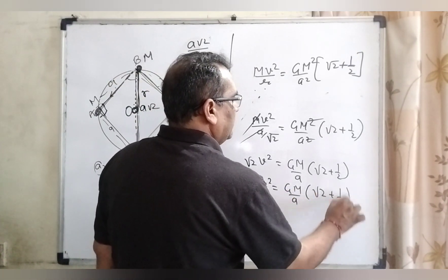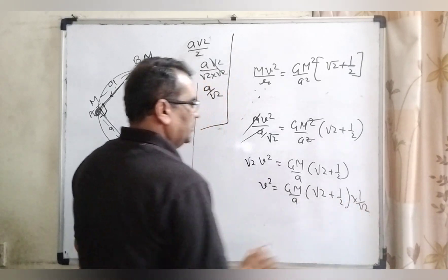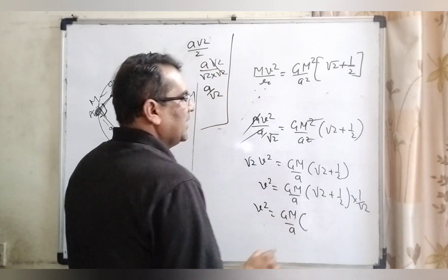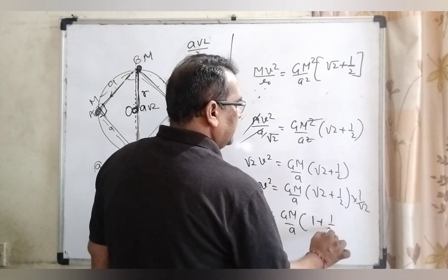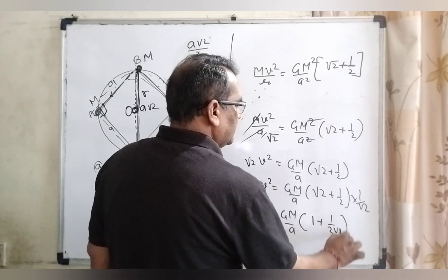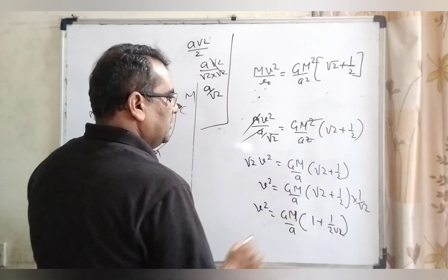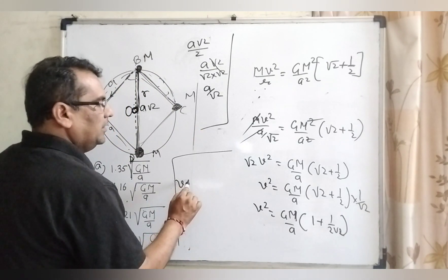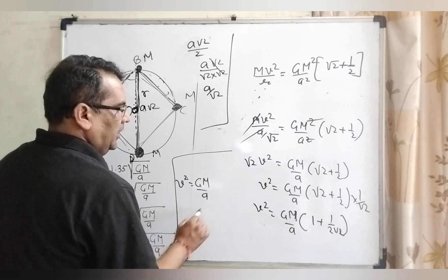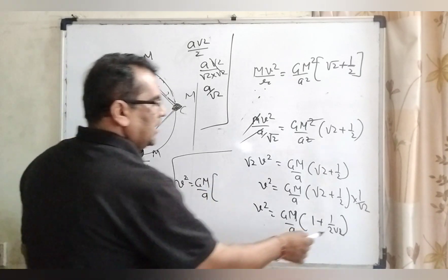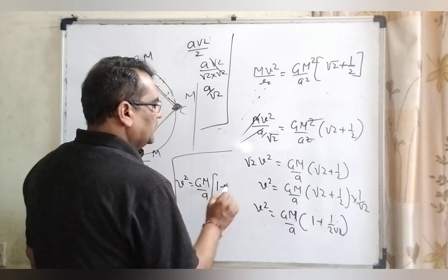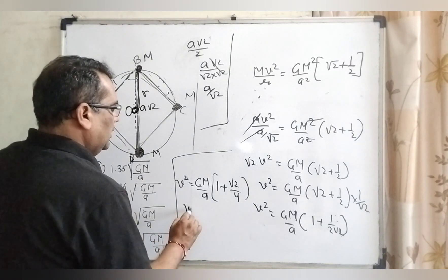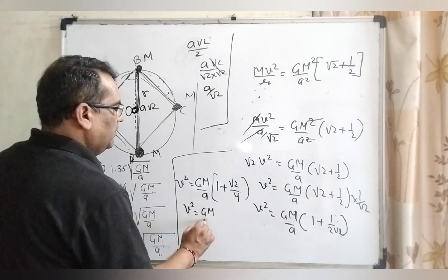1 by 2 divided by 1 by root 2. Then V square GM by A. This is 1 and 2 root 2 is the value. And if you by solving V square GM upon A and rationalize this number root 2 root 2, then it become root 2 plus root 2 by 4. And GM A.